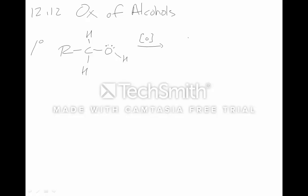Oxidation of primary alcohols can go to aldehydes. And in some cases they can continue to be oxidized to the carboxylic acid. Primary alcohol → aldehyde → carboxylic acid. Notice there's still a hydrogen on the carbon attached to oxygen — that's why the aldehyde can go to the carboxylic acid.